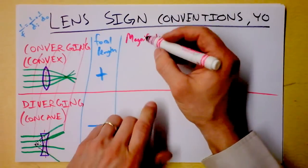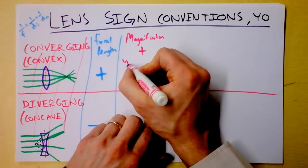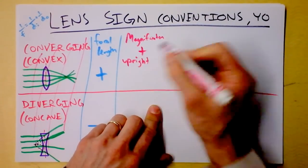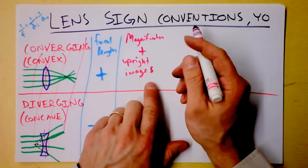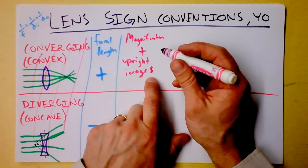I'm going to say magnification is positive for upright images. That was obvious, I suppose. But an upright image is the same orientation as the object.